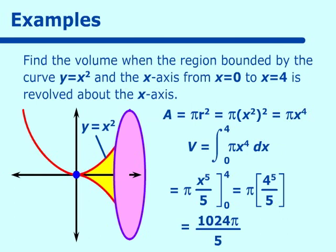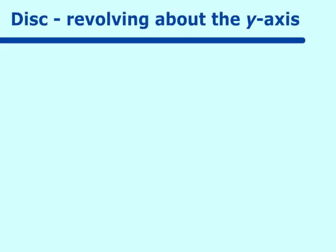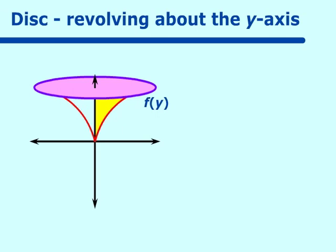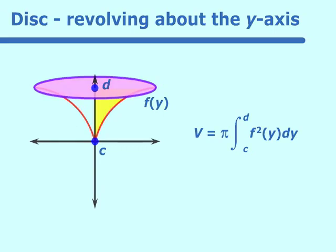Always remember to look for that radius, even as problems get more complicated. Now let's talk about revolving around the y-axis. This time our function is f of y, and we revolve it around the y-axis. We'll call the initial point c and the ending point d. Our volume will be pi times the integral from c to d of f of y quantity squared dy. We're just changing from x's to y's, so the orientation is quite different.